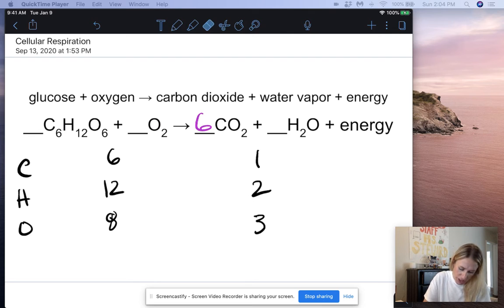And then that will change both the carbons and the oxygens. So now I have six carbons and we're balanced there, which is great. And I now have six times two, which is 12 plus one more, which is 13 oxygens. Now it's kind of a weird number to have of oxygens. So let's balance hydrogen first.